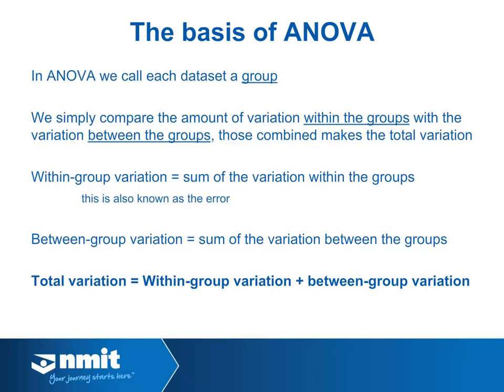In ANOVA, we call each sample we're comparing a group. In the Wolf River contamination data, within each contaminant we have three groups: the surface, the mid-depth, and the bottom. ANOVA compares the amount of variation within the groups, totalled together, with the variation between the groups. Those combined make up the total variation in the entire set of samples.